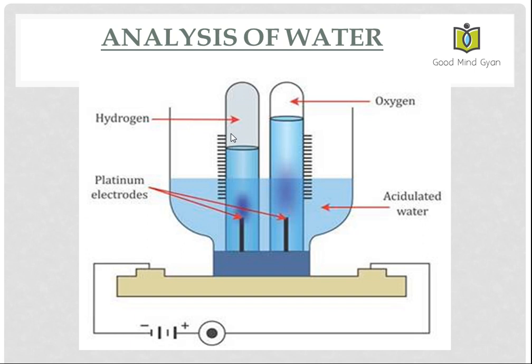However, we can also find the ratio of hydrogen and oxygen gas with respect to their weights. And that is found to be 1 to 8. I hope you have understood the analysis of water.